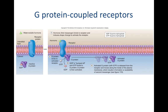I know this topic can be confusing, so I like to include several different pictures. This picture says 'water-soluble hormone' — you can pretend that says neurotransmitter. So you have your neurotransmitter bind to your receptor. The receptor can then activate your G-protein. Here is your activated G-protein, and again you see this GTP molecule.